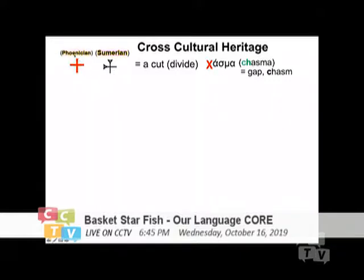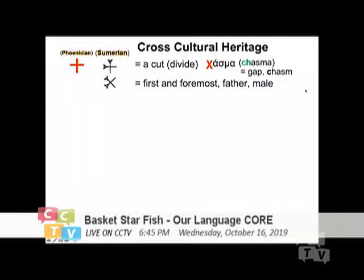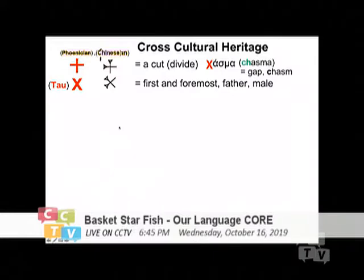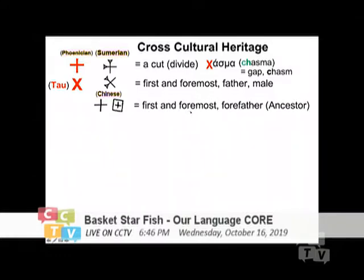I compare it to the Phoenician sign. The Sumerian also has this sign — it means the first and the foremost, the father or the male. For my Chinese ear, the Tao actually means the head. So it's easy for me to understand this as the father figure. In Chinese, we have this and this, and for us it also means the first and the foremost and the forefather, and of course it means the ancestor. We keep putting this cross this way or that way.